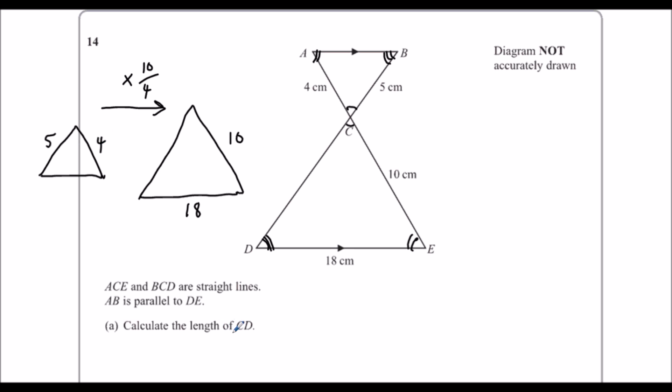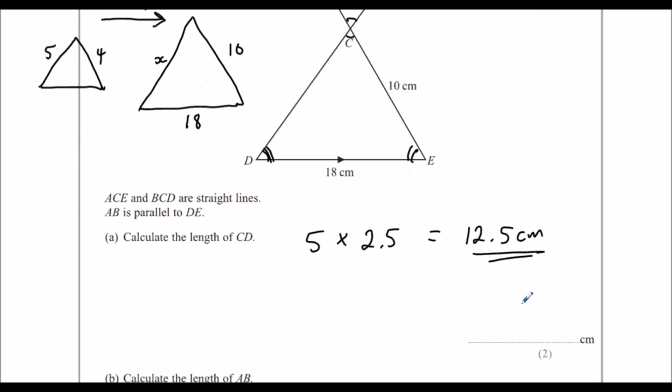Then the question, first question says calculate the length of CD. That's this one here, so this is x for the first question. So it's five times by the scale factor, five times ten over four, or two point five. So five times two point five, that's twelve point five centimeters.